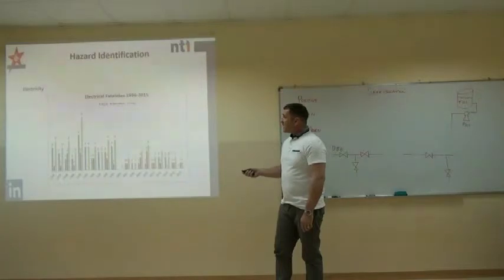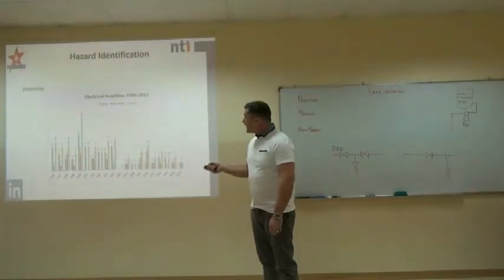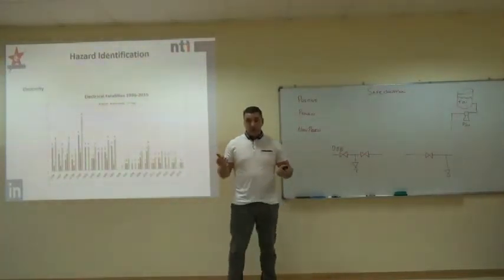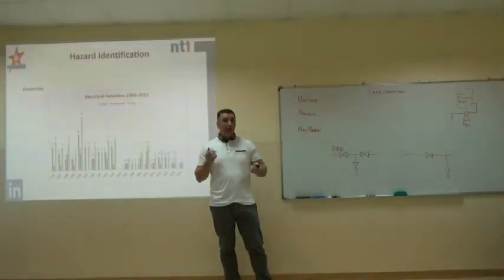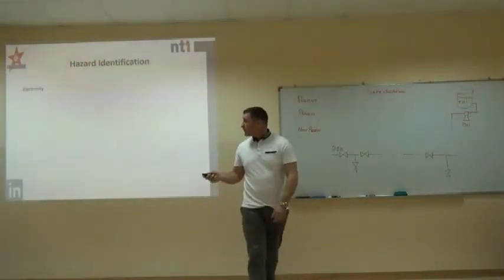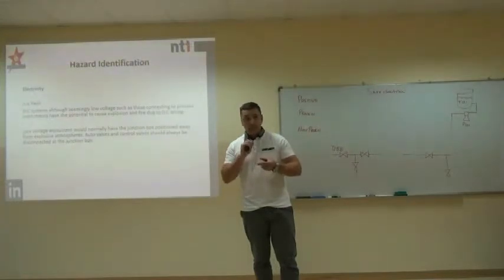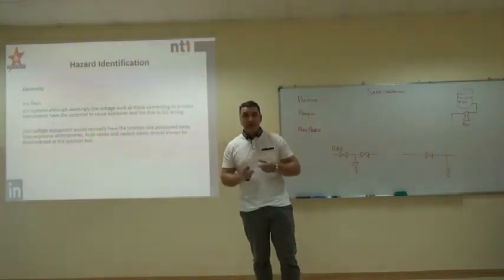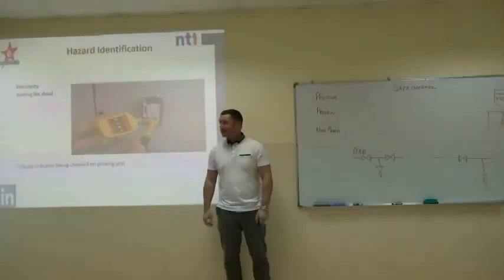Electricity. This is a graph of electrical fatalities in the UK — blue is at work and red is non-work. We know the dangers of high-voltage AC: it causes burns to our body, it effectively stops our heart from beating and causes ventricular fibrillation — effectively giving us a heart attack or extreme burns. Low voltage DC causes DC arcing, which is an ignition source. We're working in an explosive environment. We must always treat low-voltage DC with respect, make sure it's isolated correctly, and to eliminate that hazardous energy we test for dead.